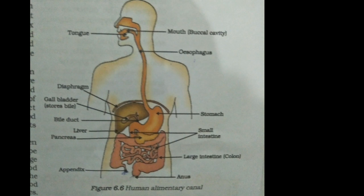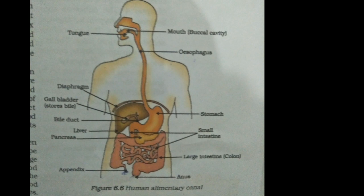The muscular walls of the stomach help in mixing the food thoroughly with digestive juices. Digestion in the stomach is taken care of by the gastric glands present in the wall of the stomach. These release hydrochloric acid, a protein-digesting enzyme called pepsin, and mucus. The hydrochloric acid creates an acidic medium which facilitates the action of the enzyme pepsin.